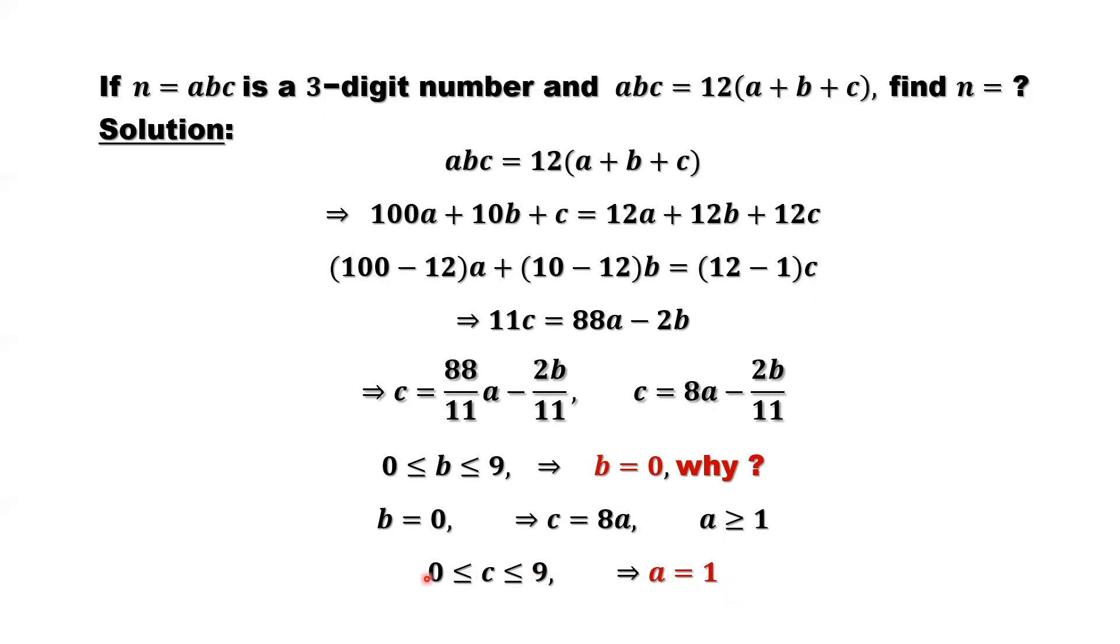Because c is between 0 and 9, plug in here. If a equals 1, c equals 8. If a equals 2, c equals 8 times 2, which is 16. It's impossible because c is a single digit. It cannot be a two-digit number. Similar discussion for 3. 3 times 8 is 24. So anything bigger than or equal to 2 to 9, those are impossible. This implies a has to be 1.